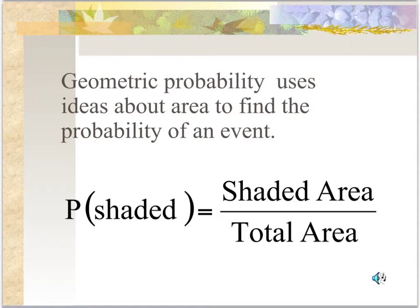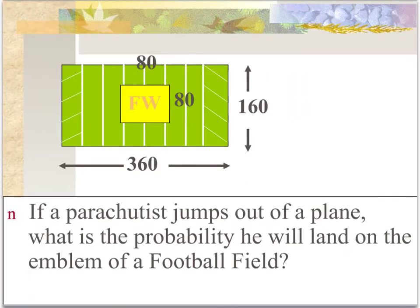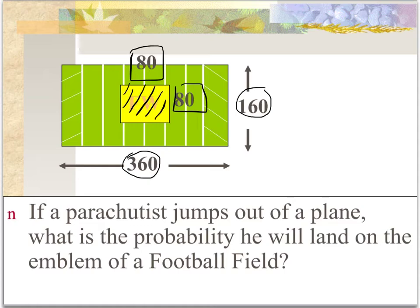Let's look at a few examples. If a parachutist jumps out of a plane, what is the probability that he will land on the emblem of the football field? In this situation, we're given the dimensions of the football field and the dimensions of the emblem. The question is, what's the probability that when he jumps onto the stadium, that he'll fall in that area?